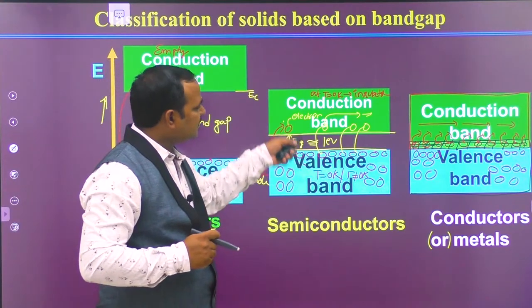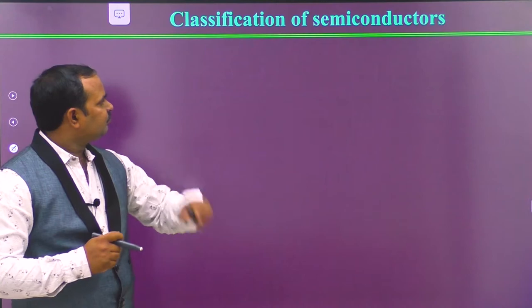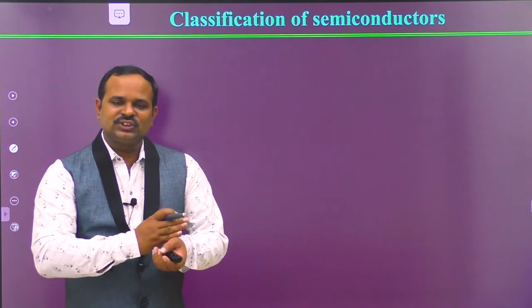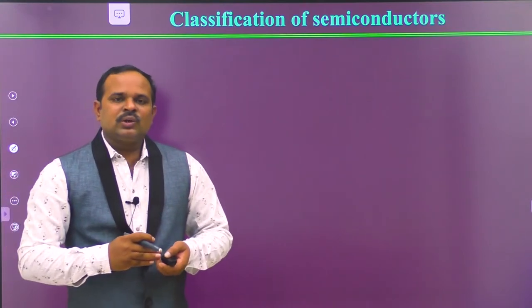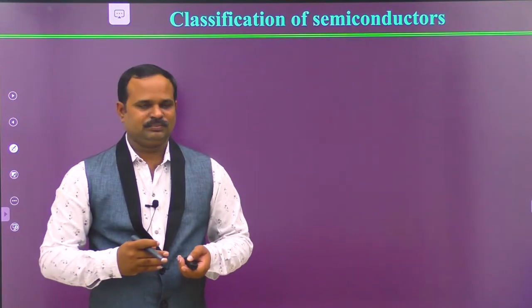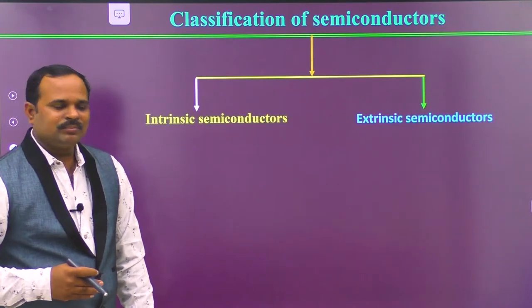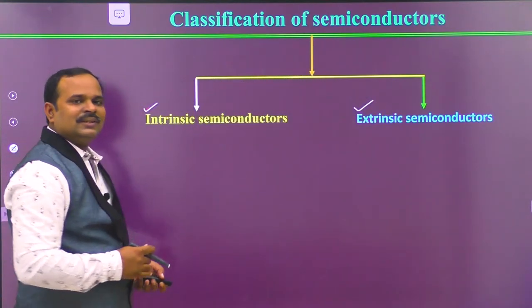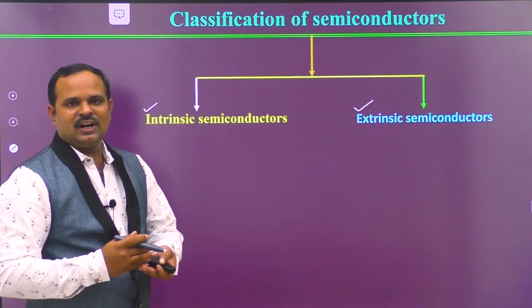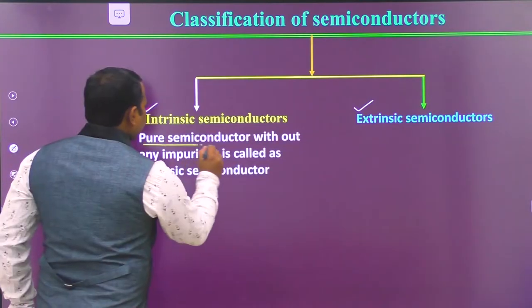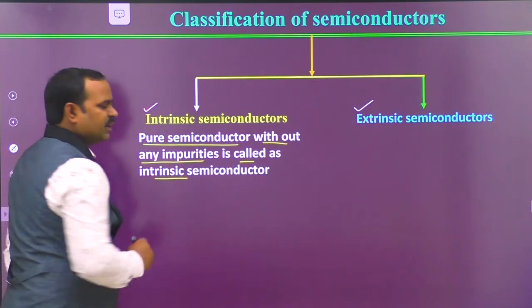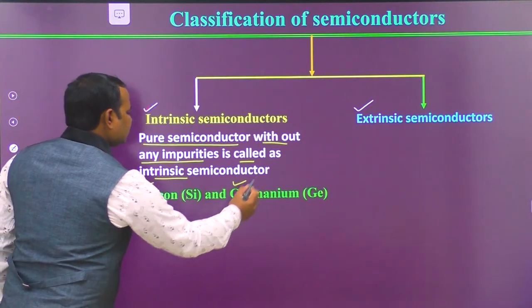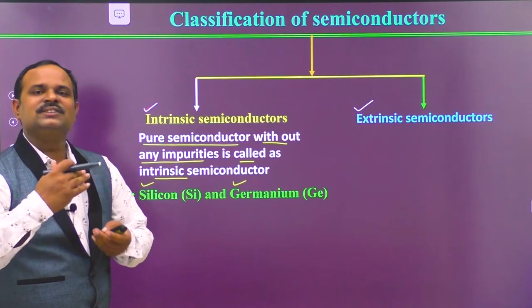Now let us discuss more about semiconductors. Semiconductors are materials whose electrical properties lie between insulators and metals. We can classify semiconductors based on purity in two ways: intrinsic semiconductors and extrinsic semiconductors. Intrinsic semiconductors are pure semiconductors without any impurities. The examples are silicon and germanium — these two are the elemental intrinsic semiconductors.